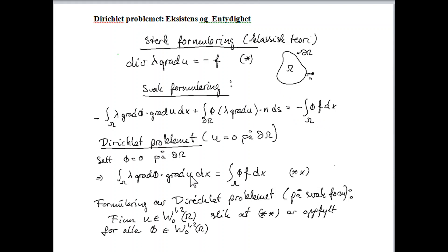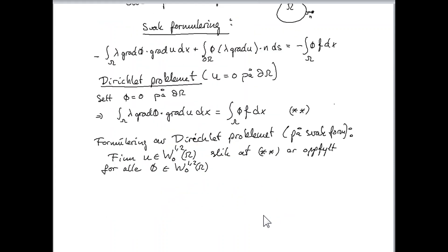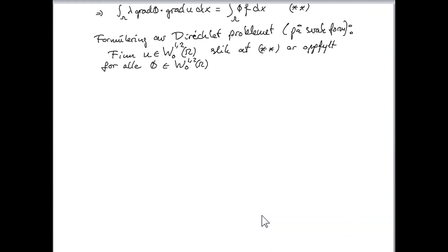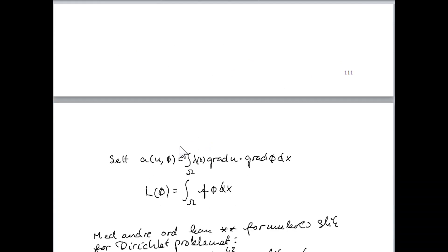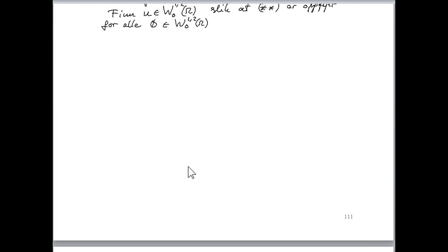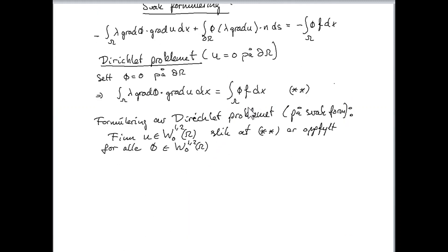It is possible to find a unique u, a member of this space, which satisfies this. And unique means that if there are two different solutions, then these solutions must be identical. If we call this guy, this integral, you see that it's dependent of two functions, phi and u. So we can call this function a(u, phi). And on the right-hand side, we can call this l(phi).